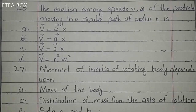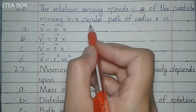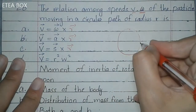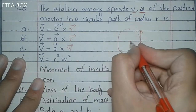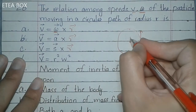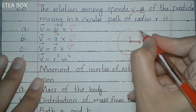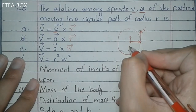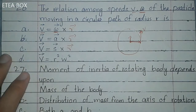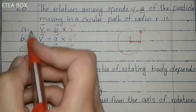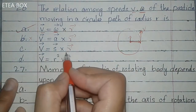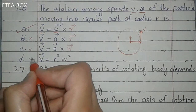MCQ 26: The relation among speed v, angular speed ω, and radius r. If x is the x-axis, v is on the y-axis, then ω is on the z-axis — all three are perpendicular. Therefore v = ω × r (cross product). Option A is correct. Options B (v = a × r), C (v = s × r), and D (v = r²ω²) are all wrong.